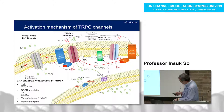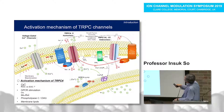This is the activation scheme of TRPC4 and TRPC5 channels. Growth factors, neurotransmitters, and oxidized glutathione activate TRPC1/4, TRPC4, and TRPC4/5 homomeric channels.